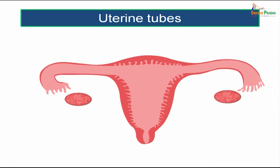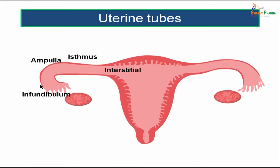Now let us move on to the uterine tubes. There are two uterine tubes attached on either side of the uterus. The parts of the uterine tube are: the interstitial part, which is attached to the body of the uterus; then the isthmus; then the ampulla; and the extrememost point, the infundibulum, which has finger-like projections pointing towards the ovary to grab the ovum released during ovulation.